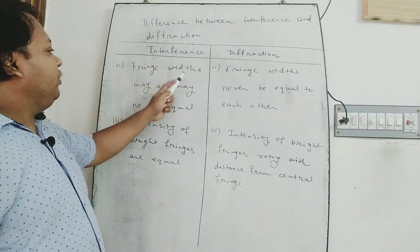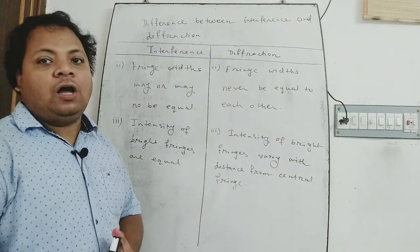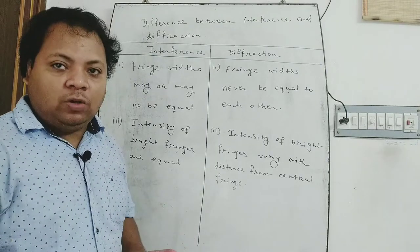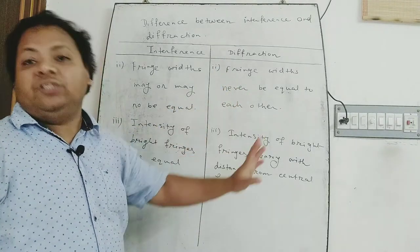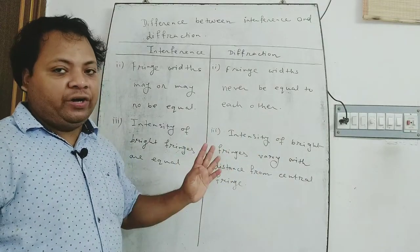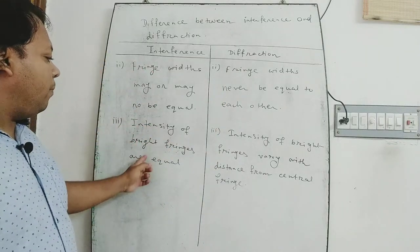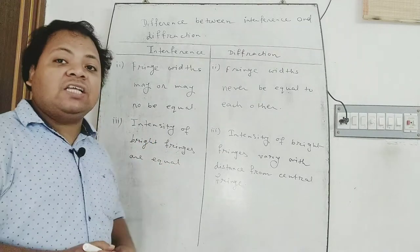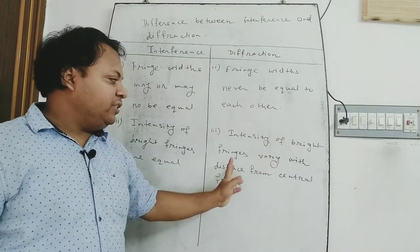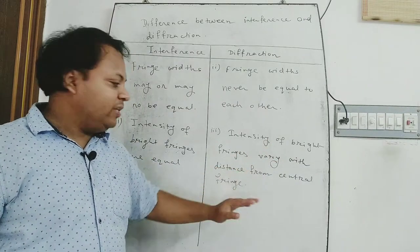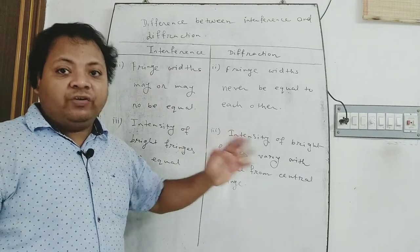Second point: in case of diffraction, fringe widths are not equal to each other — fringe widths are different. In case of interference, the intensities of bright fringes are equal. In diffraction, the intensities of bright fringes vary with distance from the central fringe — that is, from the central fringe, the intensities of bright fringes decrease progressively.